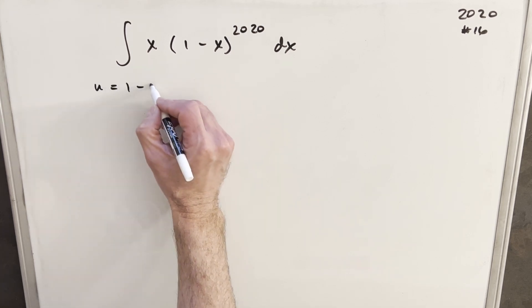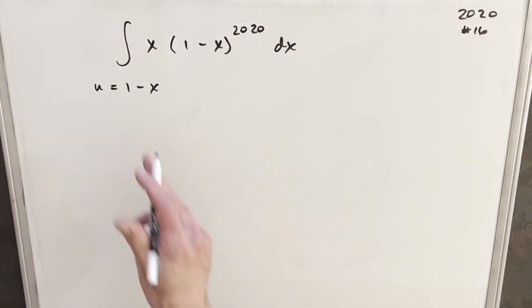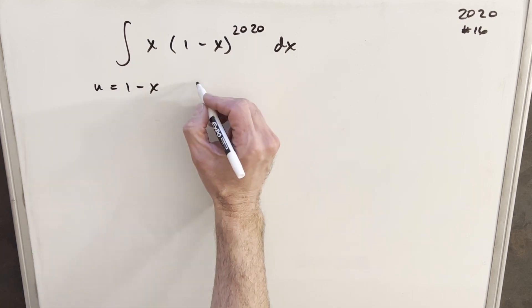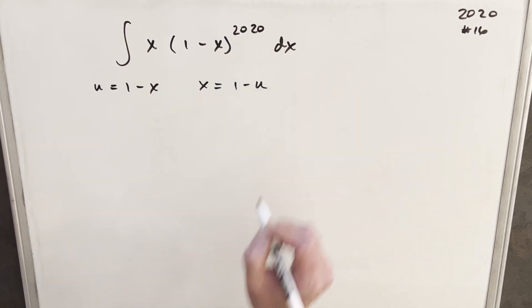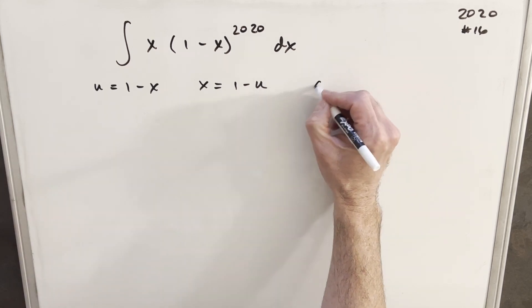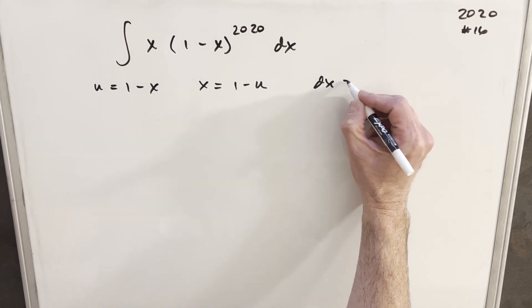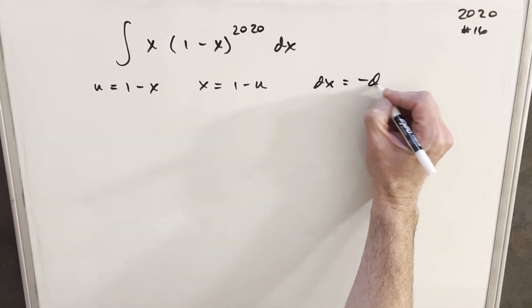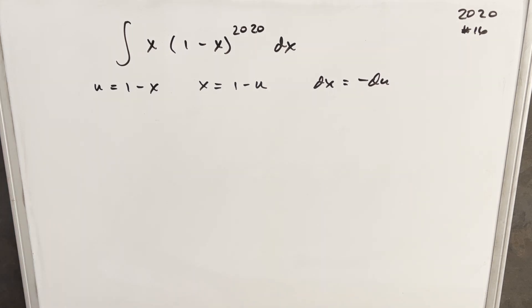I'm going to call my u equal to 1 minus x. And then just rearranging this to solve for x, we'll find that x equals 1 minus u. Then from here, we'll take our derivative. So we're going to find dx equals minus du. And we'll make this substitution.